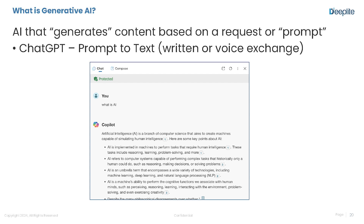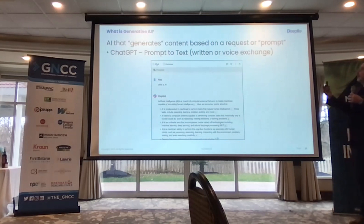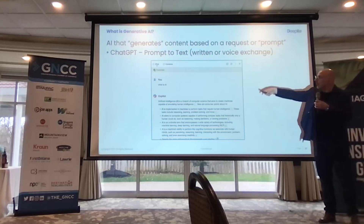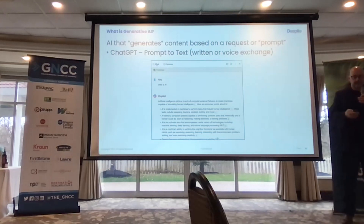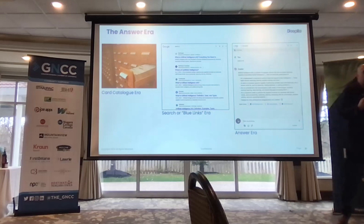Now we have this whole generative AI concept that's really democratized AI — it's on everybody's desktop. Generative AI is AI that can generate content based off a prompt. With ChatGPT, you have a prompt and you get text. I call this the answer era. If you look at the last 30 years — we went from the card catalog era, where you'd go to a library and use the Dewey Decimal System, to the blue links era with Google search, to now: what is AI? Here's your answer.